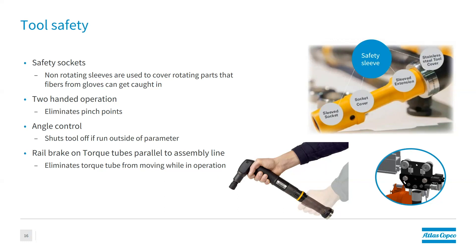Safety sockets are something a lot of customers require — operators are often forced to wear gloves, and tooling spinning at the end can cause injury if fabric gets caught. Safety sleeves allow the operator to hold the yellow sleeve while the socket inside turns, eliminating any chance of a hand getting pinched or torn. We also have tooling that requires two triggers — your hand must be on both the top and bottom trigger for the process to start, eliminating pinch points and ensuring the operator's hands are in the correct location.